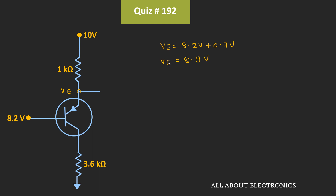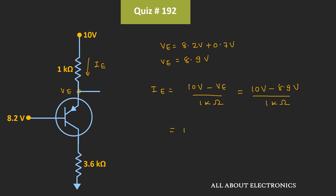Once we know the emitter voltage, we can find the emitter current. The emitter current IE equals (10 V − VE) / 1 kΩ = (10 V − 8.9 V) / 1 kΩ = 1.1 mA. Assuming the collector current IC is approximately equal to the emitter current, the same current flows through the collector resistor. So, IC is also equal to 1.1 mA.